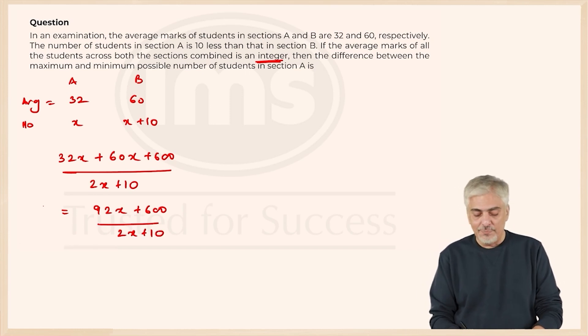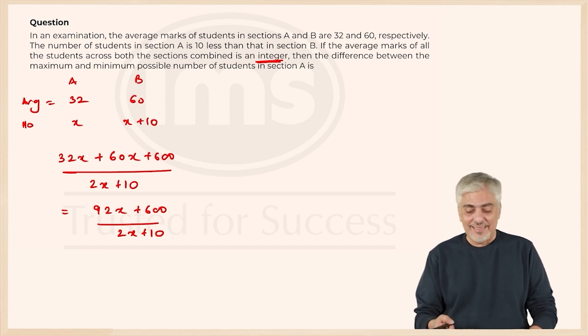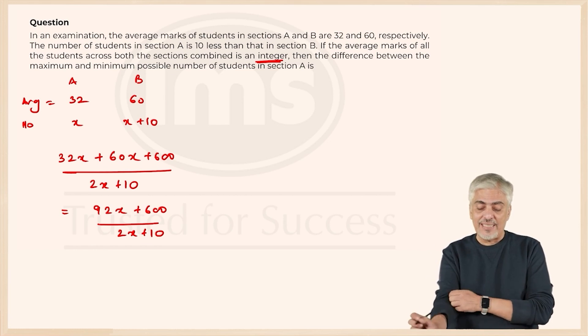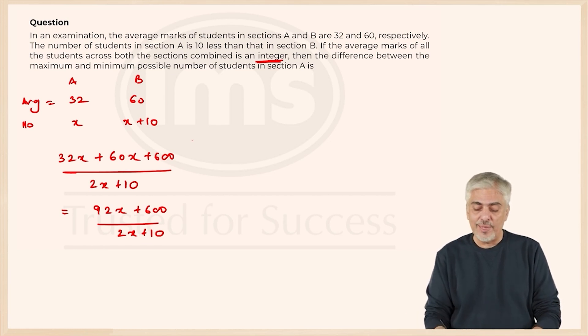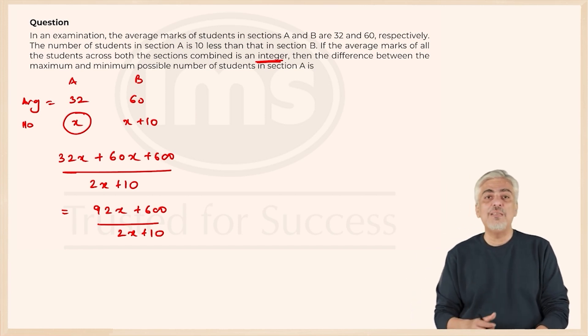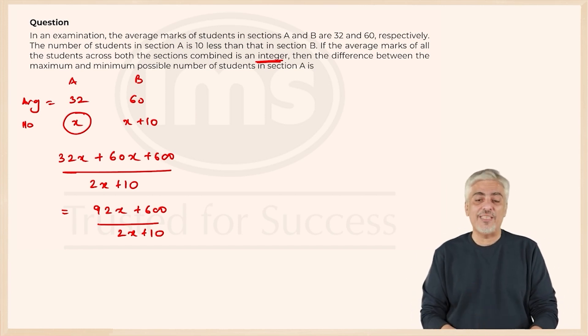Now they are saying that this number is an integer. Even besides that, the question was still difficult - the difference between the maximum and the minimum possible value of the number of students of section A, that is x only. So difference between the minimum value of x and the maximum value of x.